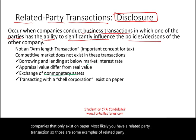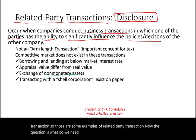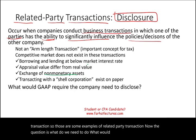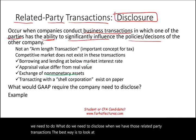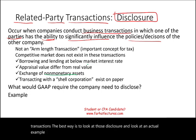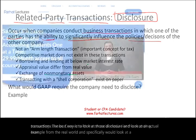Now the question is, what do we need to do? What does GAAP require us to disclose when we have related party transactions? The best way to understand this is to look at actual disclosure examples from the real world — specifically, we are going to look at a Tesla example.